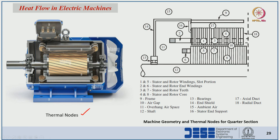Now we will identify the thermal nodes. We have observed the heat sources: copper losses, stator core losses, rotor core losses, rotor copper losses, and mechanical losses due to friction and windage. To model heat transfer from one point to another, we divide the machine surface into different thermal nodes. In this image — a quarter section of the machine taken from the Lipo textbook — we can see the different thermal nodes.